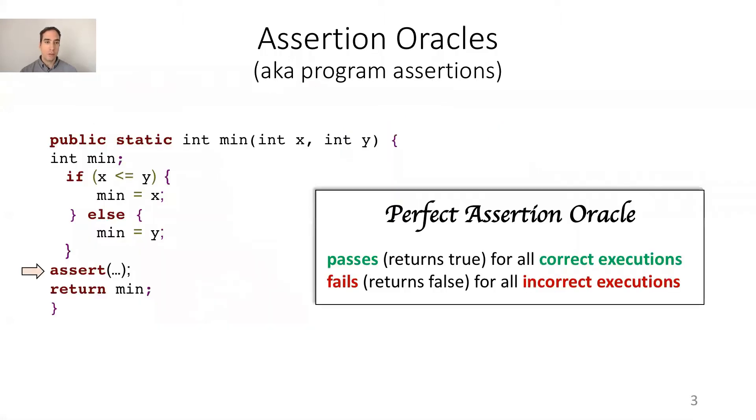Assertion oracles, also called program assertions, are executable boolean expressions placed inside the program that predicate a variable at a specific program point. Assertion oracles work well in synergy with input test generators because they avoid the need to define a test oracle for each generated test case.